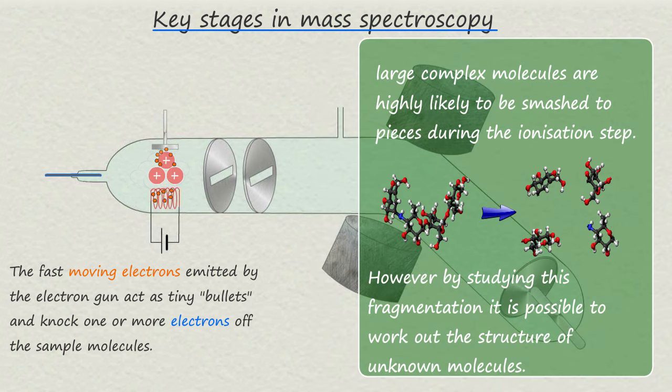You should also be aware that large complex molecules are unlikely to survive this ionization step intact. The electrons from the electron gun are likely to smash most if not all of these large molecules into smaller fragments.